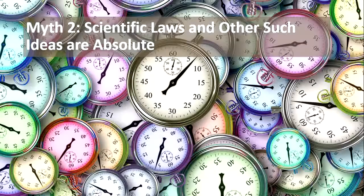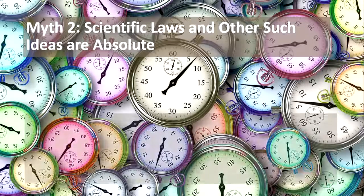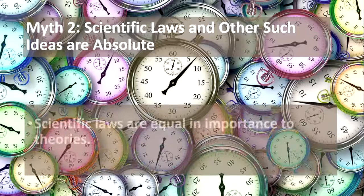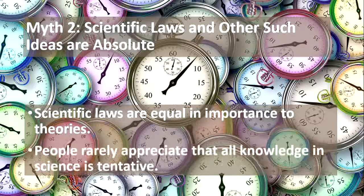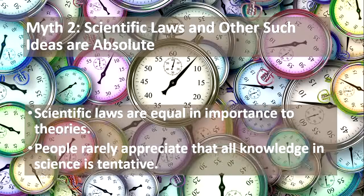The second myth is that scientific laws and other such ideas are absolute. It is again a big lie. Actually, scientific laws are equal in importance to theories, so we cannot say that laws are important and theories are not. The problem is that people rarely appreciate that all knowledge in science is tentative.